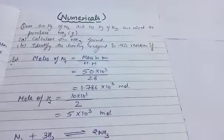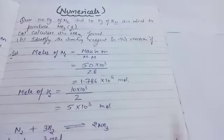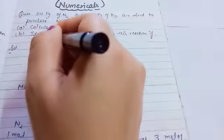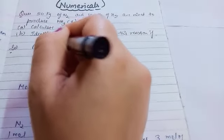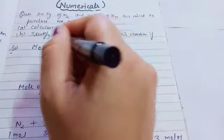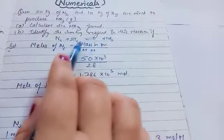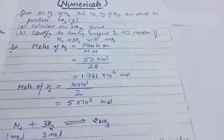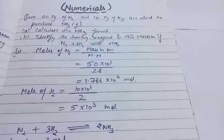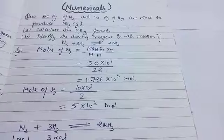First, when calculating the limiting reagent, your first step is to write the balanced equation. As we know, this is Haber's process — nitrogen reacts with hydrogen to give NH₃. Balancing it: N₂ + 3H₂ → 2NH₃. This means one mole of nitrogen reacts with three moles of hydrogen to give two moles of ammonia. So nitrogen and hydrogen are required in a 1:3 ratio.